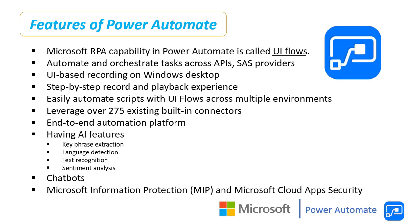Power Automate can easily automate scripts with UI Flows across multiple environments and also leverages over 275 existing built-in connectors like Office, Twitter, SharePoint, RSS, Outlook, and so on. There are pre-built templates that you can start with. Microsoft claims it now has an end-to-end automation platform capable of reinventing business processes for a wide range of workloads across industries.